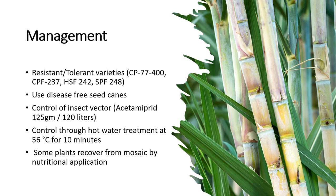For management, use resistant and tolerant varieties to prevent this disease. Use disease-free seed canes and control insect vectors. Control can also be achieved through hot water treatment at 56 degrees centigrade for 10 minutes applied to the sets. Additionally, some plants recover from mosaic through proper nutritional application, so providing proper nutrition can also help control the disease.